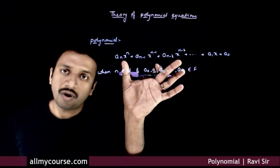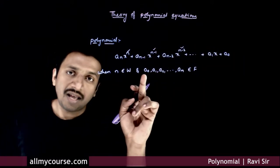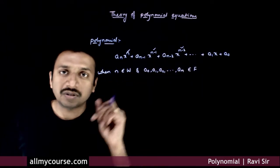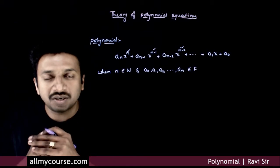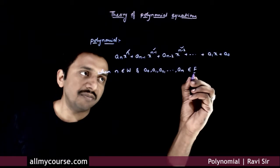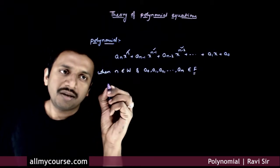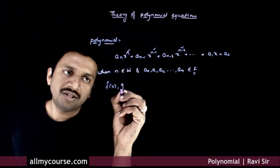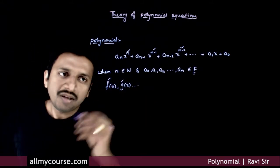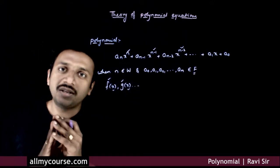So an expression of this form where n belongs to whole numbers and a_0, a_1, a_2, up to a_n — the coefficients of different powers of x — belongs to some number system, is called a polynomial in the variable x over the number system F. Polynomials are usually denoted by f(x) or g(x), where f is the name of the polynomial and the variable inside the bracket is the variable over which the polynomial is defined.